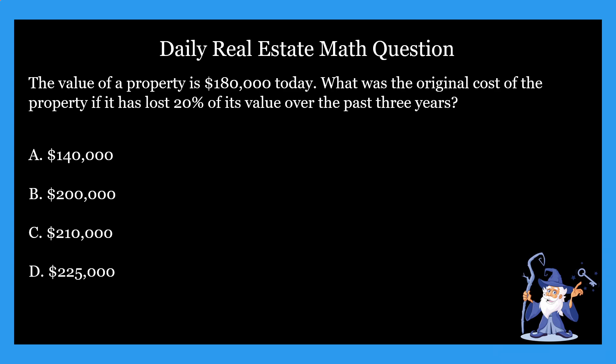The question says the value of a property is $180,000 today. What was the original cost of the property if it has lost 20% of its value over the past three years? And it gives us four options, four different numbers to choose from, four different answers. So like usual, I'm going to give you guys some time here to figure out the problem, do the math. If you need to pause, go ahead. So go ahead and do that right now.